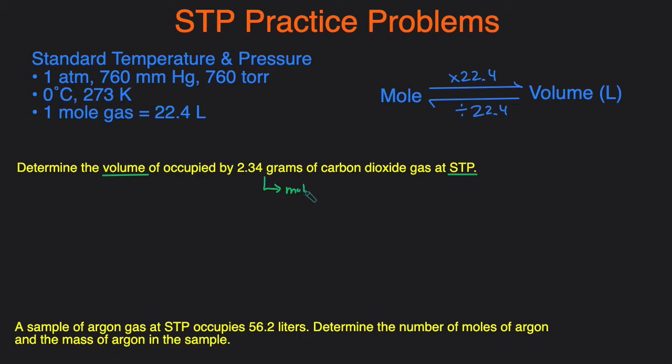From grams, we can convert to moles and it's just going to be a mole to liter conversion again. So we'll first take the 2.34 grams of CO2 and convert it to moles, which is just dividing by the molar mass. So let's put one mole of carbon dioxide on top, divided by the molar mass of carbon dioxide, which is approximately 44.01 grams of carbon dioxide.